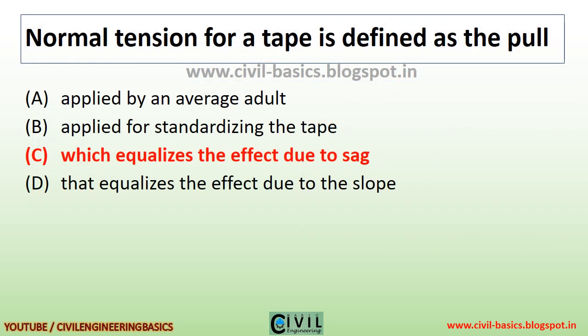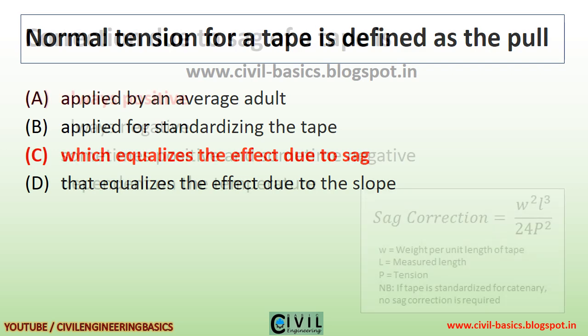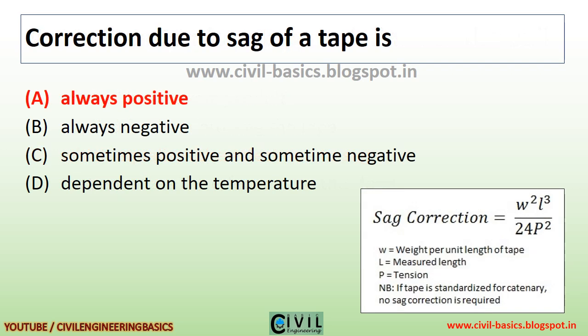Normal tension for a tape is defined as the pull which equalizes the effect due to sag. Correction due to sag of a tape is always negative.